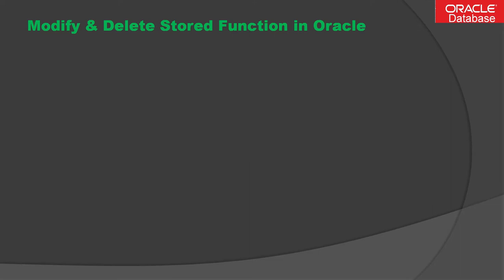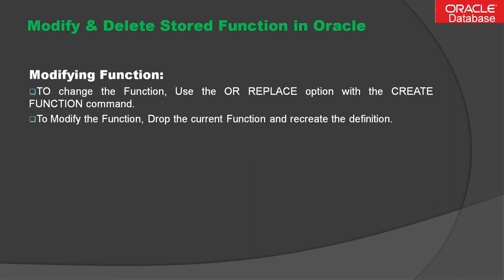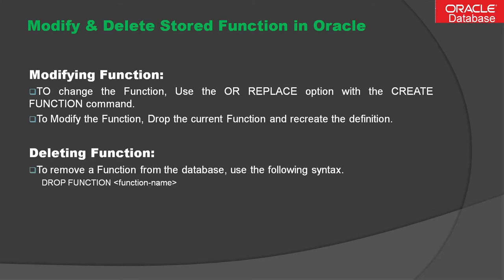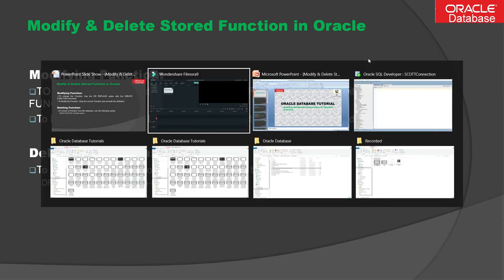Now let's move to how to modify and delete a stored function in Oracle. To change or modify a function, you have to use the OR REPLACE option with the CREATE FUNCTION command. You first drop the current function and then recreate the definition. To delete a function, the command is DROP FUNCTION followed by the function name.